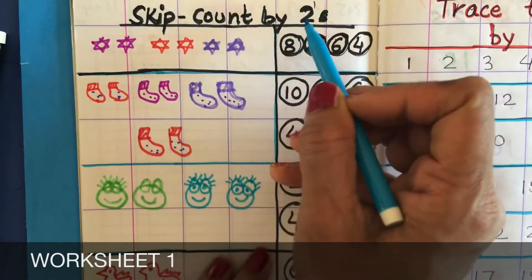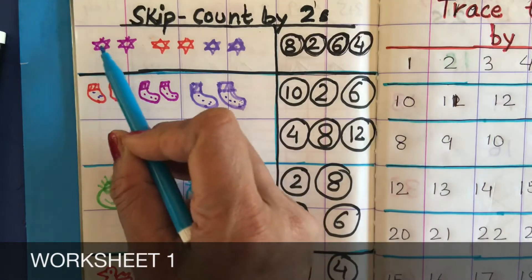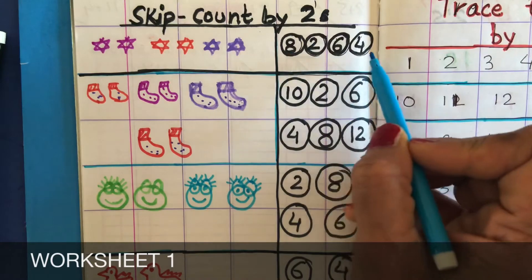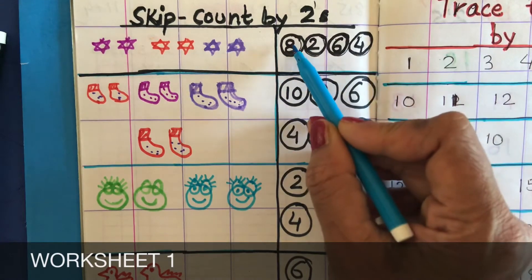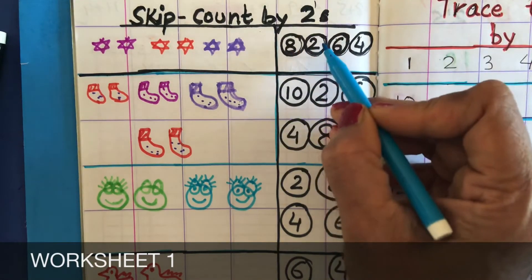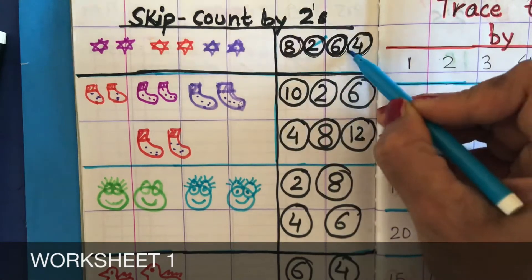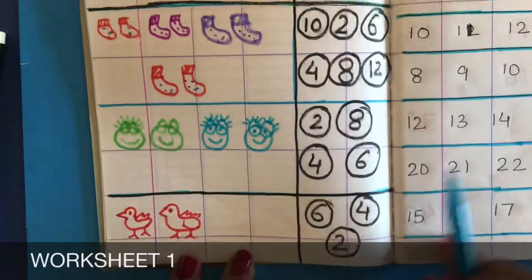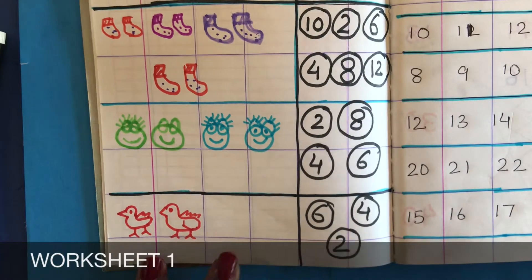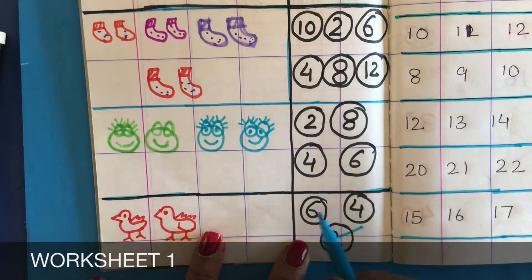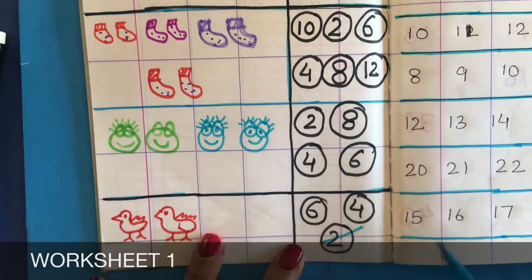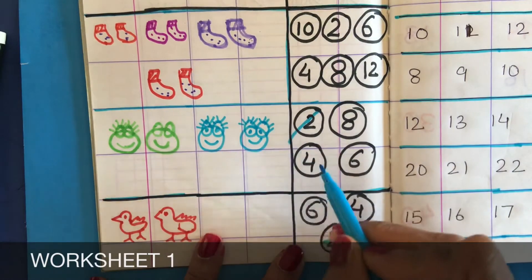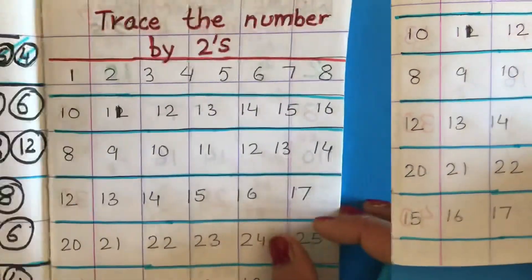Here is skip counting by 2. They will count 2, 4, 6 and from these choices they have to identify 8. Which numbers are there — two, four, six? The same here: how many birds are there? Two, four, six. How many faces are there? Two, then count by two — four.